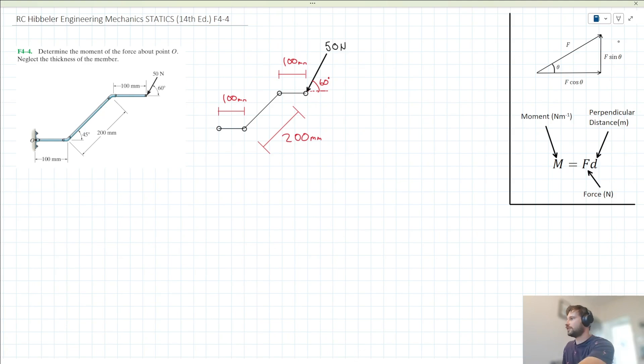We can do that using vector decomposition as shown in the top right. The vertical component of this 50 Newton force is 50 sin 60, and the horizontal component is 50 cos 60. So we've decomposed this 50 Newton force into its vertical and horizontal components.